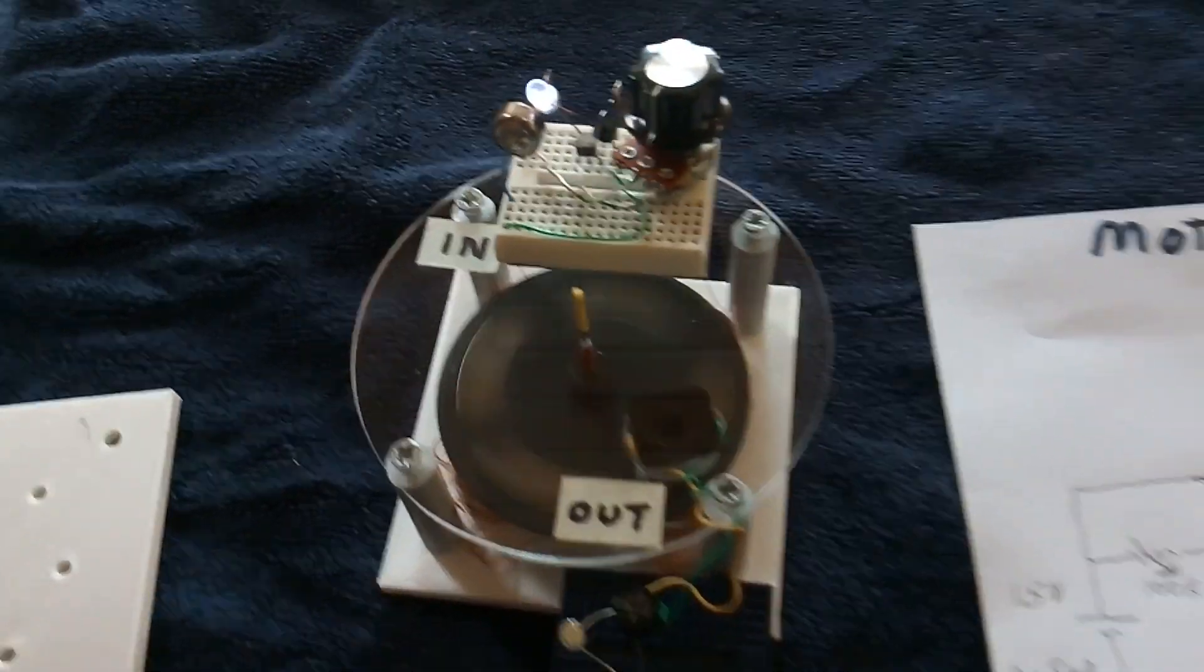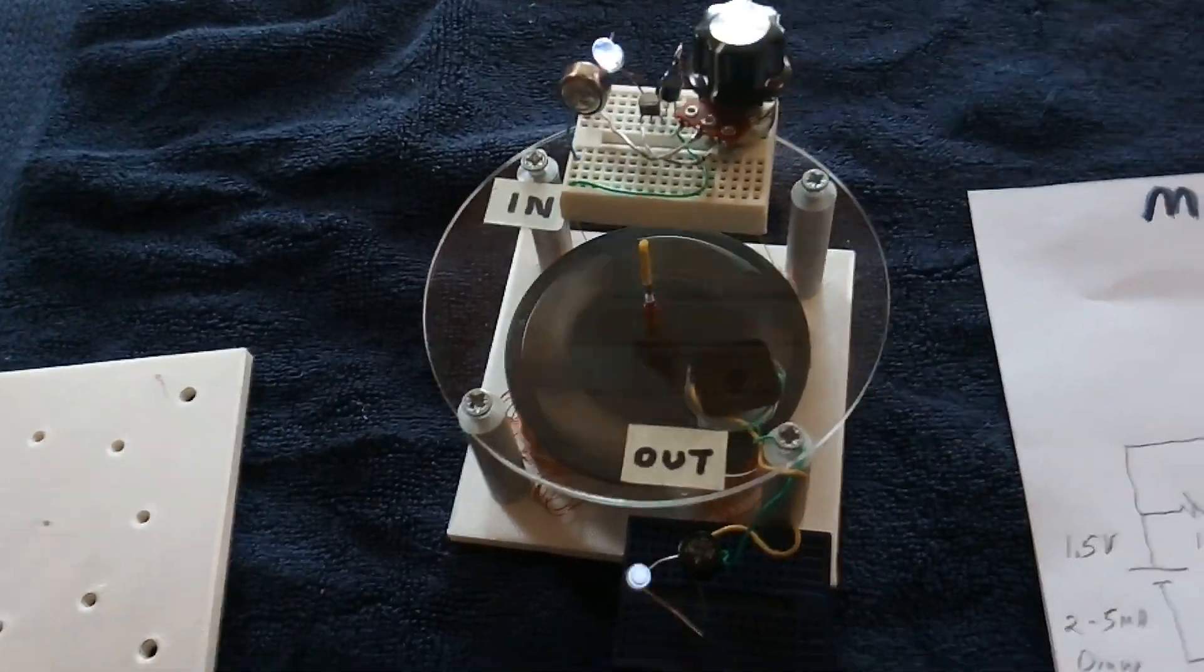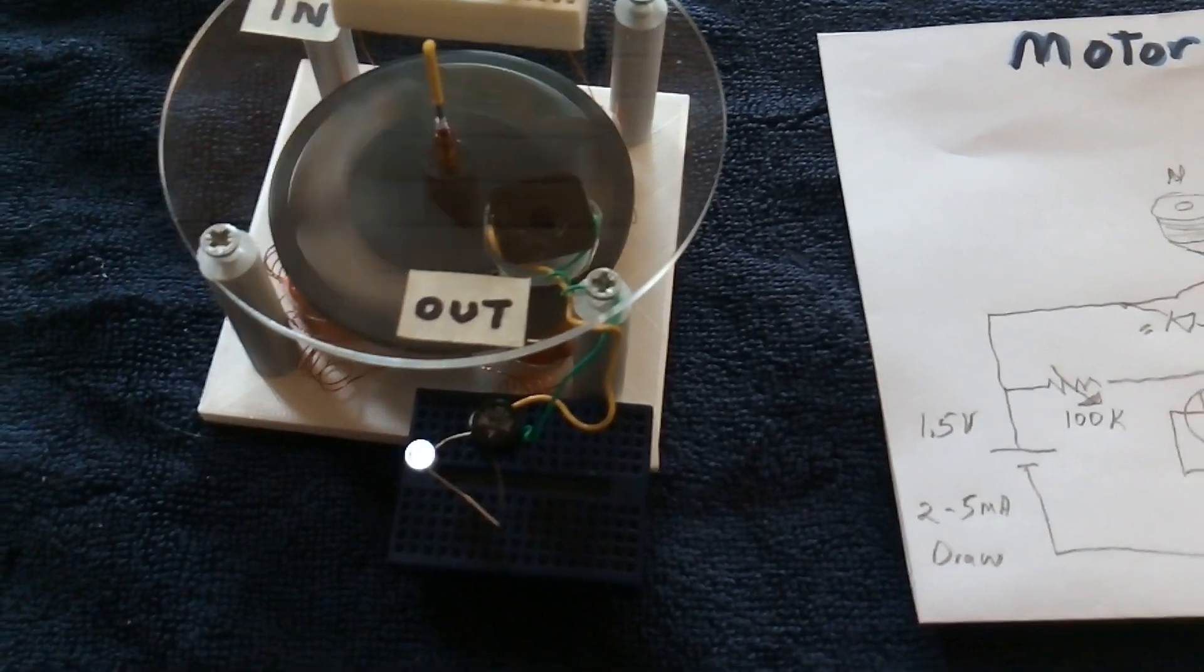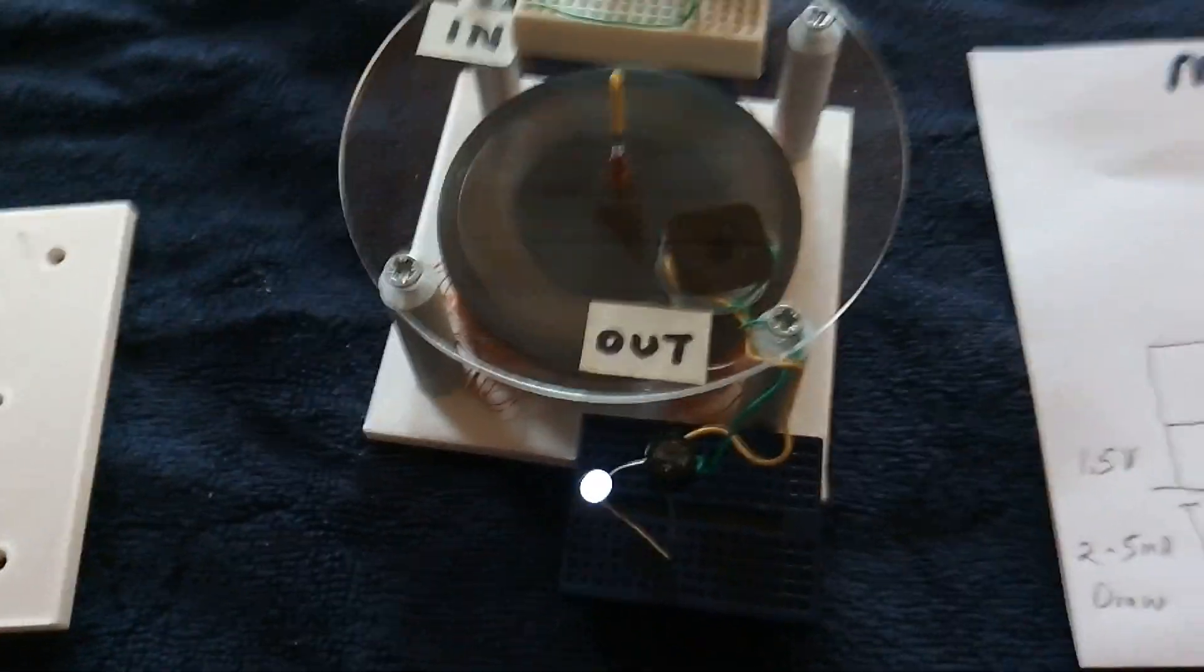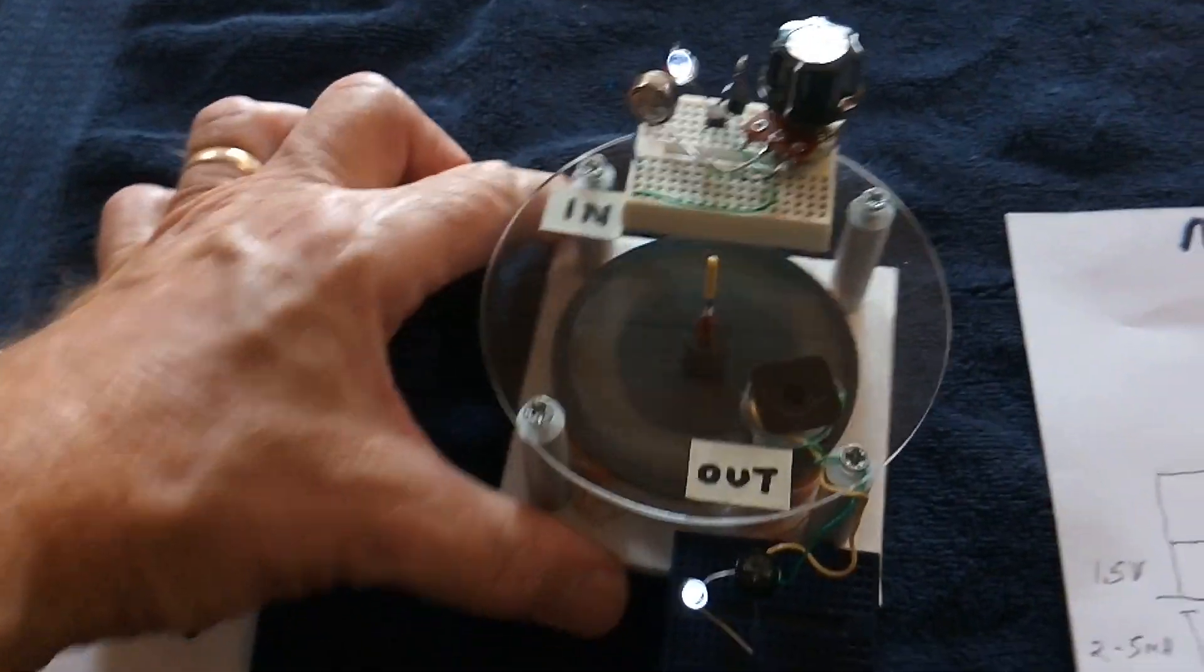Once the RPM gets up to a certain amount, it starts triggering the circuit, and then the generator starts kicking in as soon as the RPM gets high enough. There it is, and there's your motor generator.